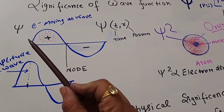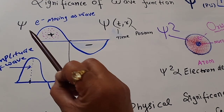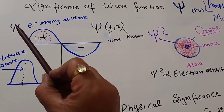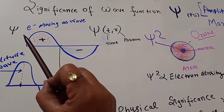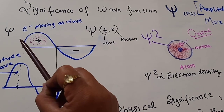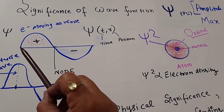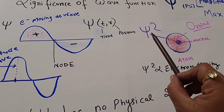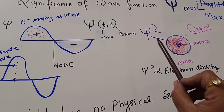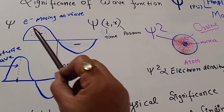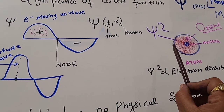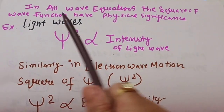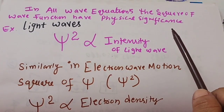We can say that if we talk about the wave function psi, it can have positive values, it can have negative values, or it can also have imaginary values. Psi is a wave function and it has no physical significance because it can have imaginary values also. But when we talk about psi squared, psi squared gives us real values. The square of psi is the probability of finding an electron in a certain area, and in all wave equations the square of the wave function has physical significance.